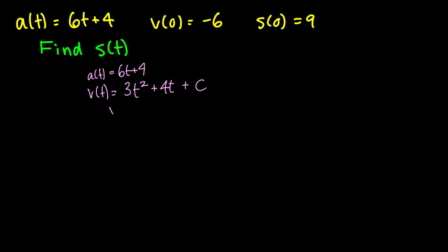But we know that v(0) = -6. Now let's plug in 0 to all of our t values here. We have 3(0) + 4(0) + C which is just equal to C. Therefore we can claim that C = -6. Therefore we can say that the velocity function is 3t^2 + 4t - 6.